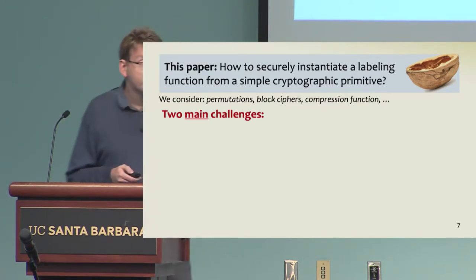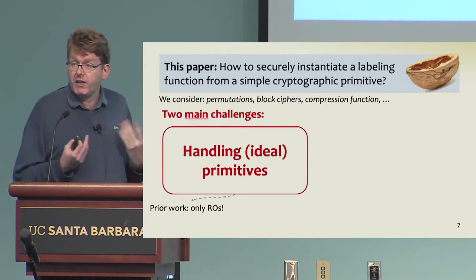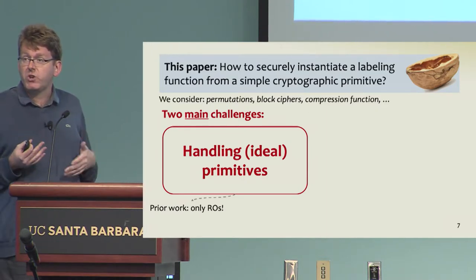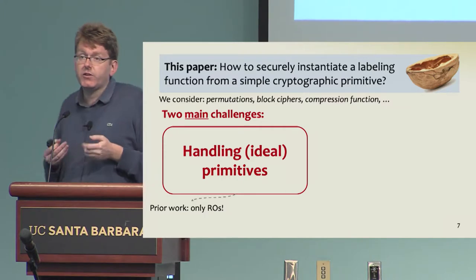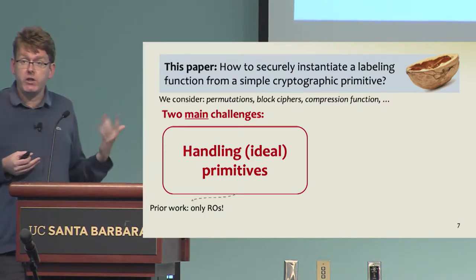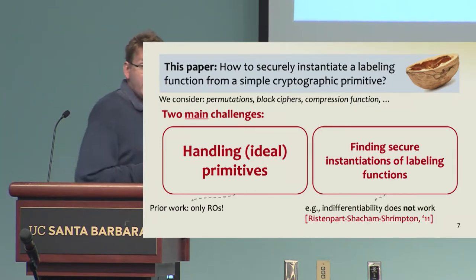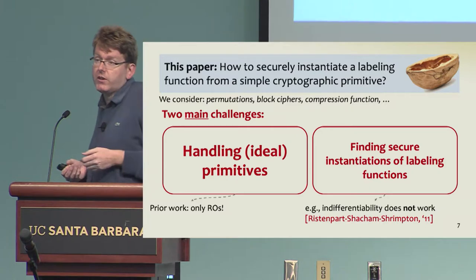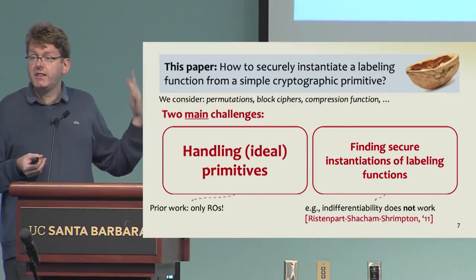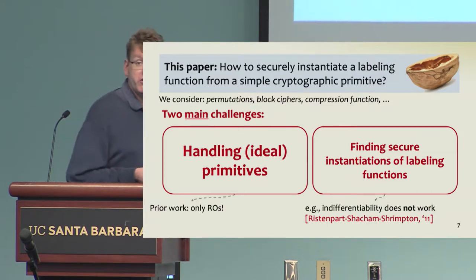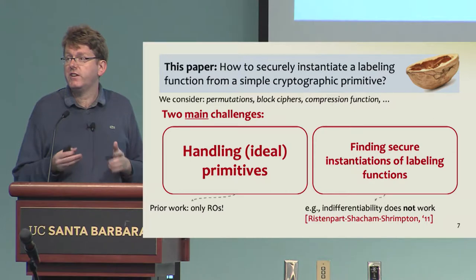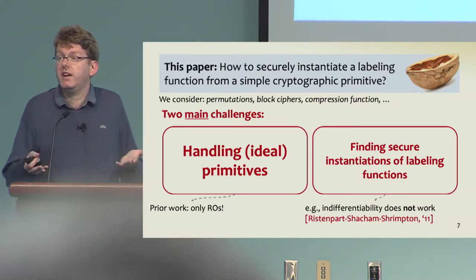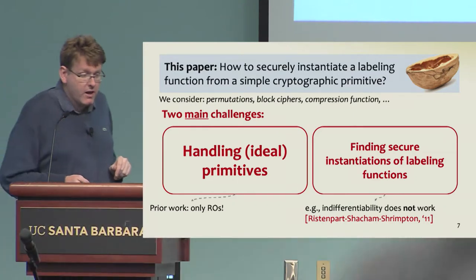There are two main challenges when doing this. The first one is dealing with the primitives themselves. Even if we model them as ideal, the techniques we have so far are inherently tied to using monolithic random oracles. We need new proofs. Also understanding what is a good construction of a labeling function is a hard task to start with. We don't have any good notions. For example, indifferentiability doesn't apply because memory hardness deals with memory-bounded adversaries and the resulting security games are multi-stage games.